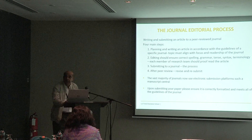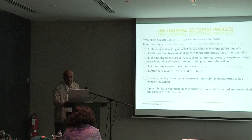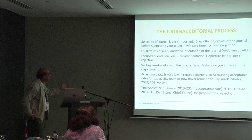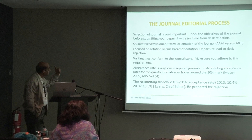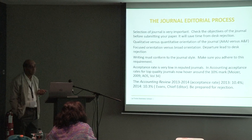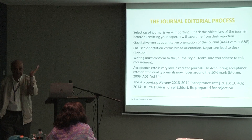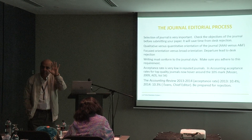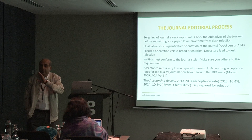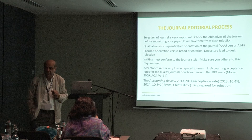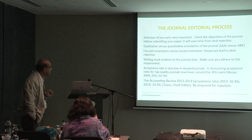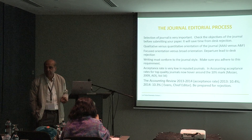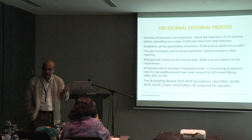Correct formatting is very important for the journal. Selection of journal is very important — quality versus quantity oriented. For example, AAAJ is qualitative; if you write a regression-based paper, chances are you will be desk rejected. Accounting and Finance, on the other hand, is amenable to both types of research.